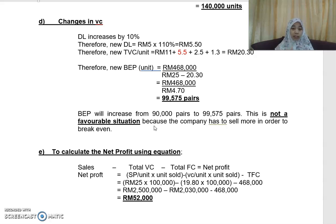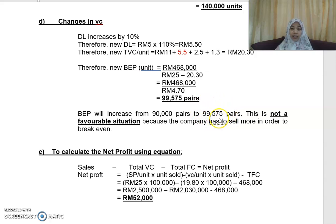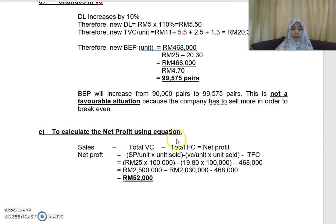Previously, after 90,000 pairs the company was making profit. Now, even at 91,000 pairs the company is still making a loss, because the break-even point has increased to 99,575. Only after 99,575 pairs will the company earn profit.